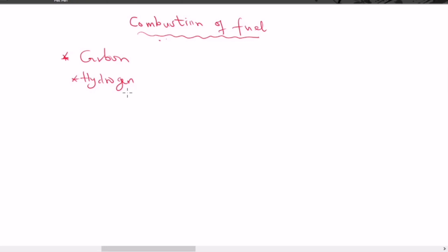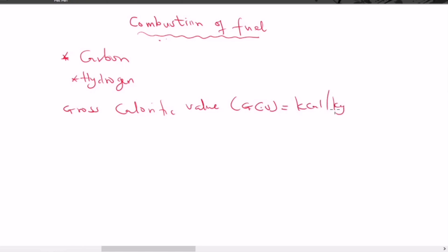The gross calorific value (GCV) has units of kilocalorie per kilogram. The chemical reaction involved is the full combustion of carbon: carbon reacting with oxygen to produce carbon dioxide. In this video we are going to learn how to find the calorific value of this reaction, specifically the gross calorific value.